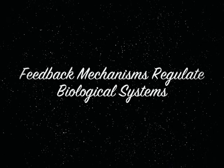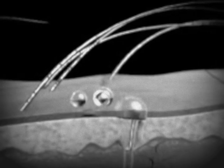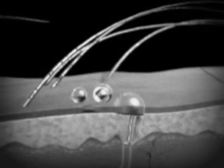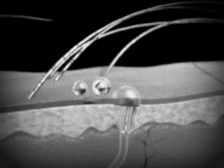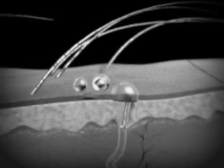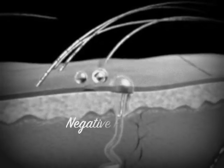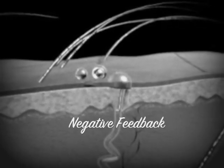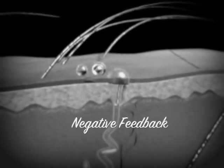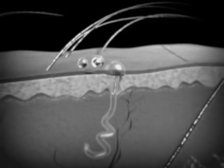Feedback mechanisms regulate biological systems. Jimmy is working hard to cut down that tree. When Jimmy gets hot from working too hard, he sweats. When his body reached a temperature level that was unsuitable, it automatically used a feedback mechanism. Sweating is an example of negative feedback because it negated the change in his body.